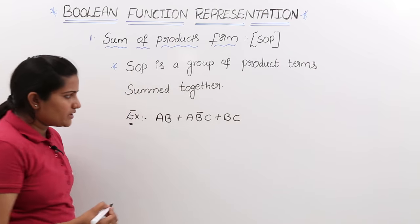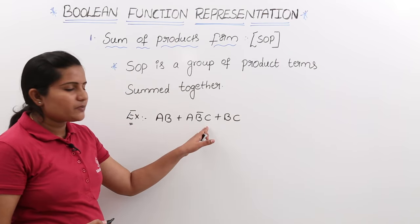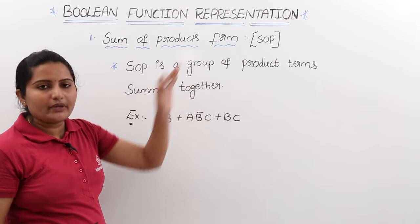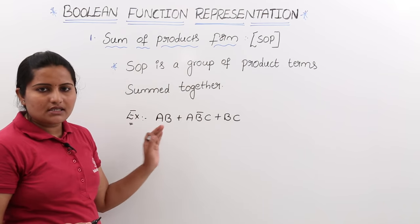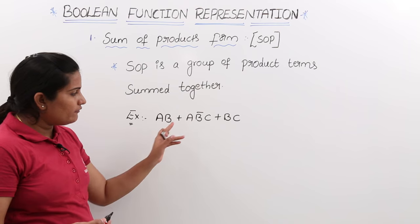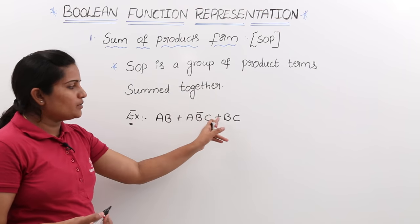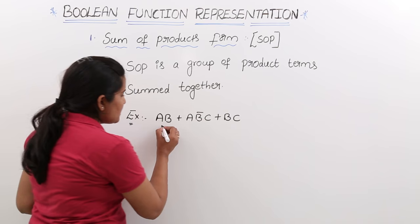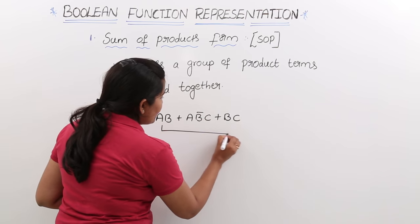If this is an expression, then we can say this expression is in SOP form. That means sum of product forms in which all product terms are summed together. All these are called product terms.